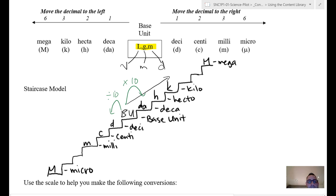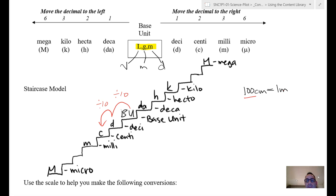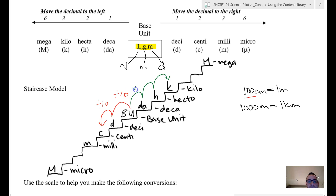This can be tricky, so let's go back to the ruler. We know it takes 100 centimeters to equal one meter. A centimeter is two steps down from the base unit of the meter, so you divide by 10 twice, giving you 100 — meaning we need 100 centimeters to equal one meter. Similarly, there are 1,000 meters in one kilometer — that's three steps up, and 10 × 10 × 10 = 1,000.